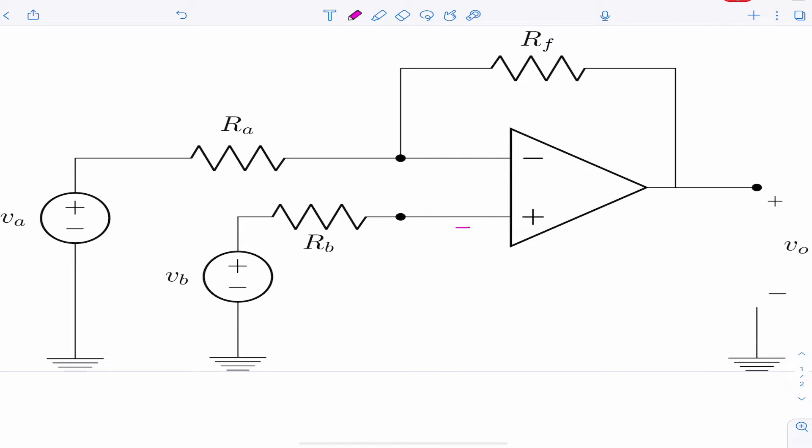So first we know that zero current enters the op-amp on the inputs, the inverting terminal and the non-inverting terminal. Now pay attention to the inverting terminal because if zero current enters, that means zero current flows through this resistor. And if zero current flows through this resistor, then the voltage drop across this resistor is zero volts.